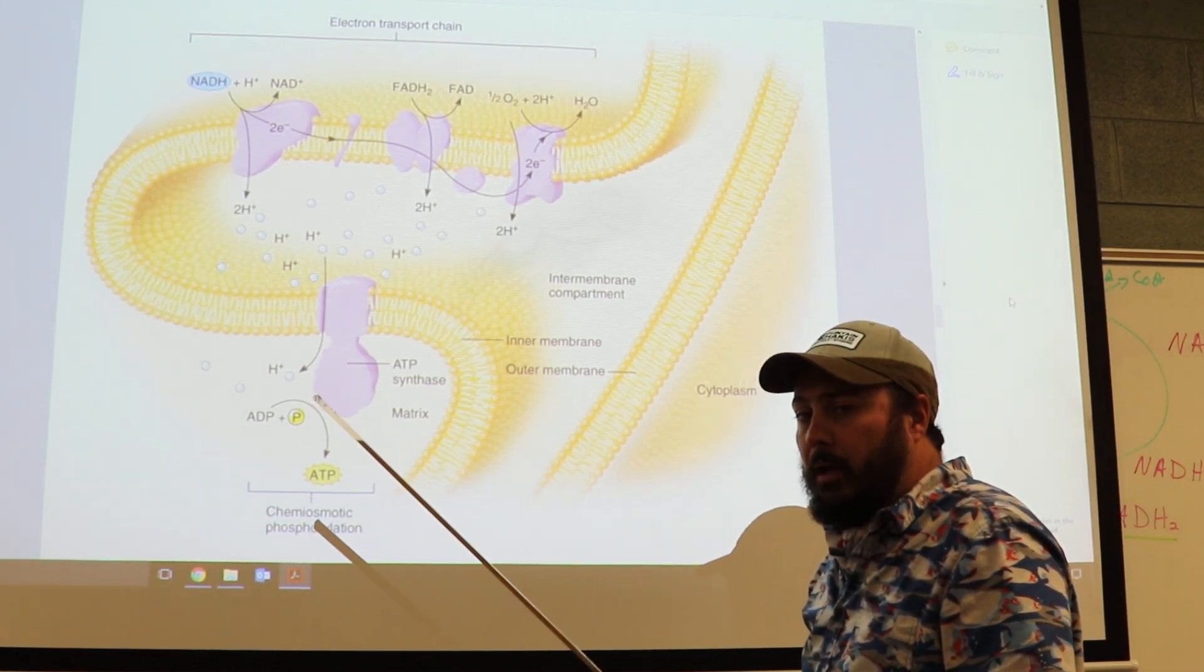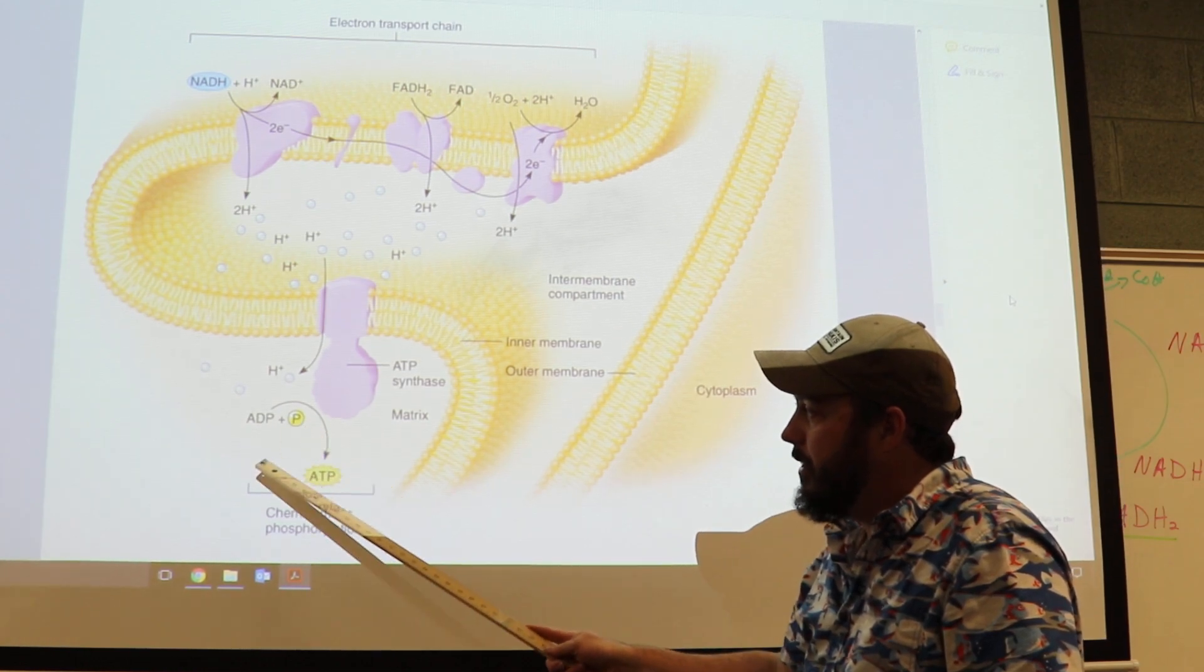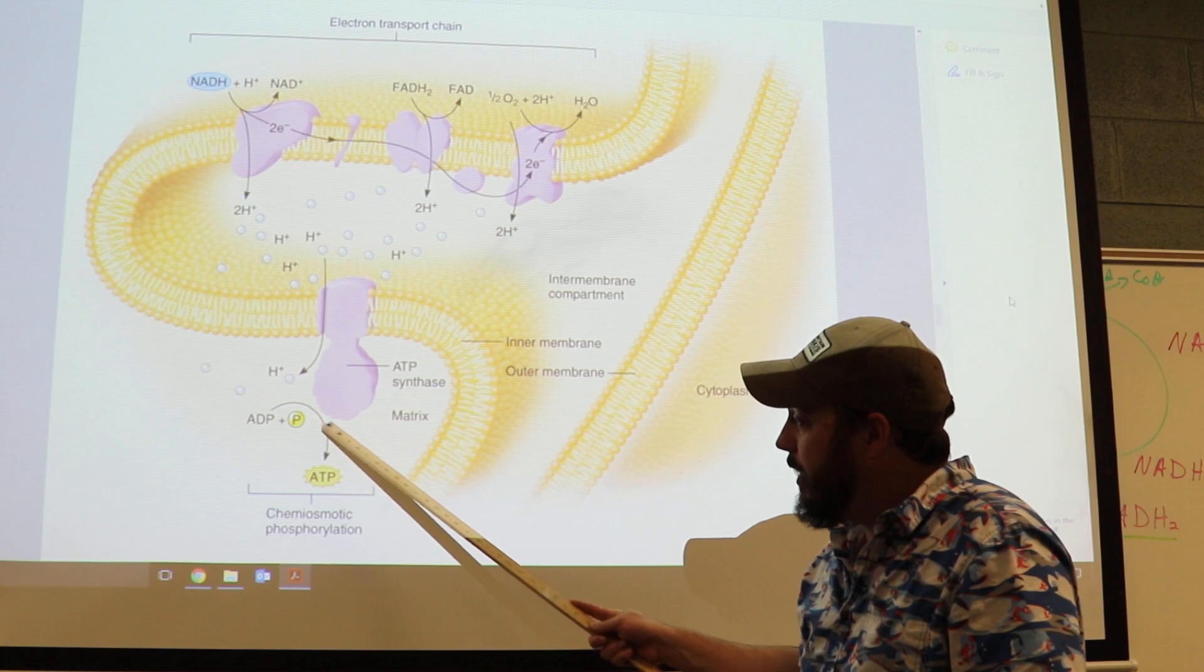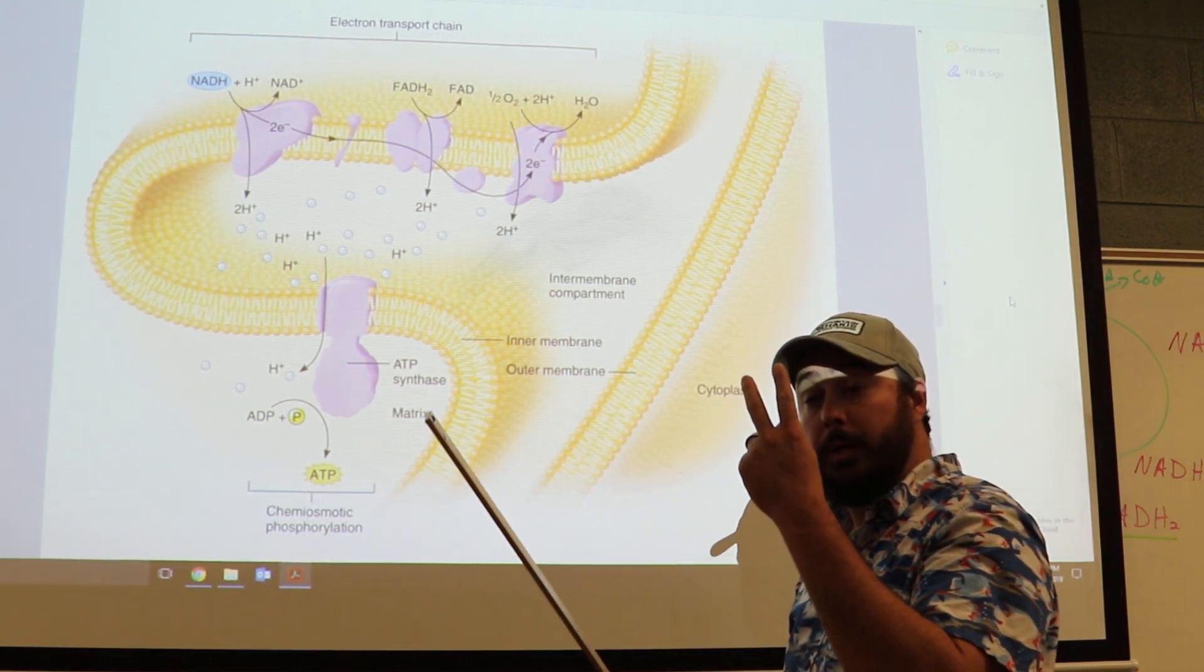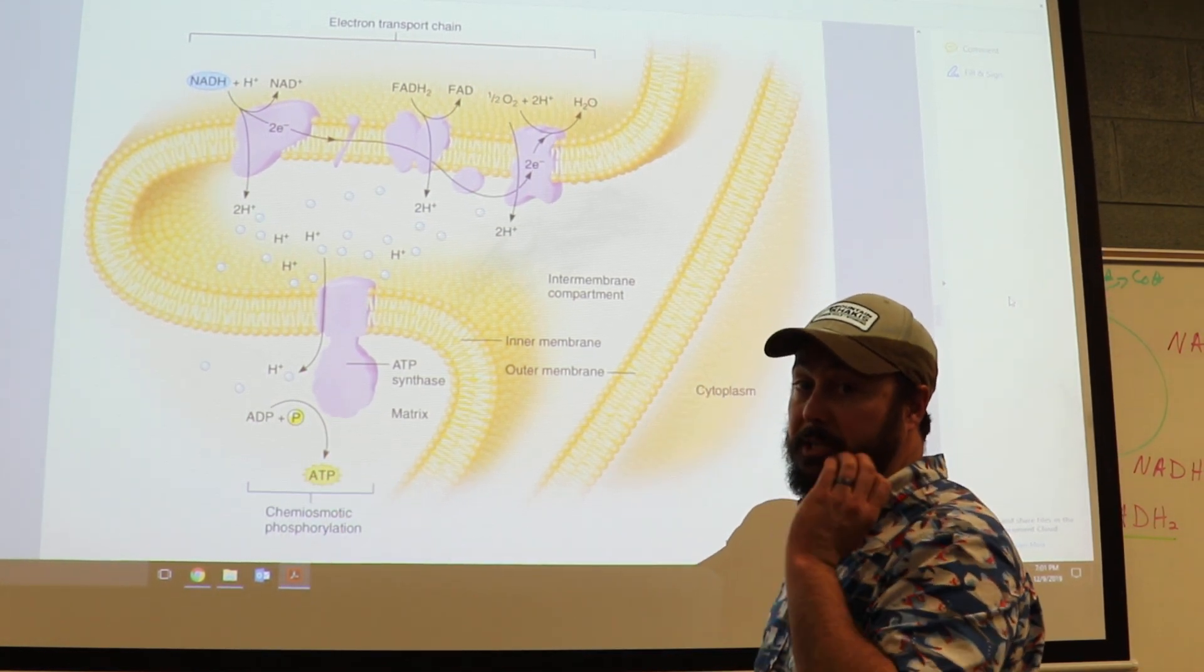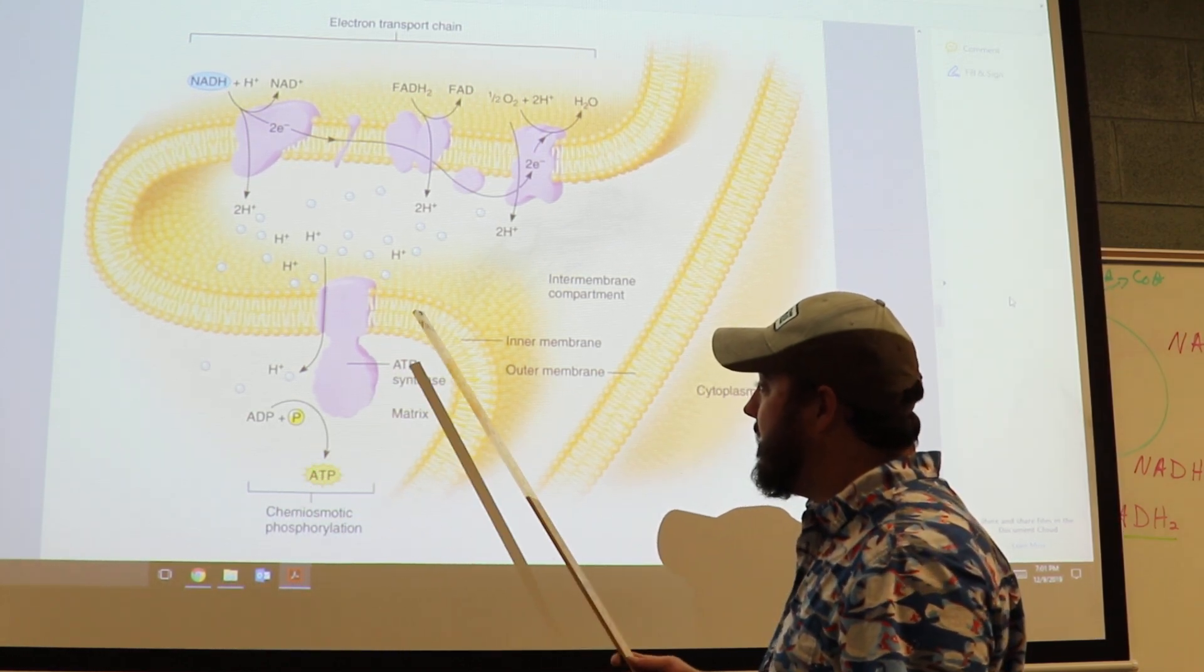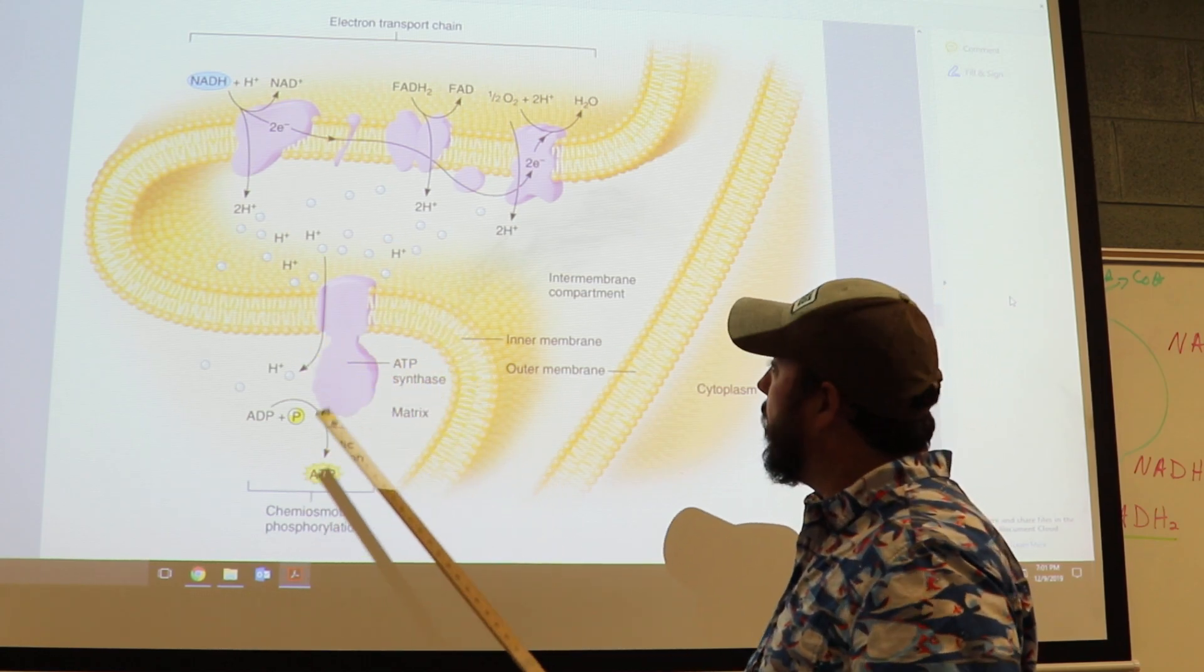It allows us to perform something called chemiosmotic phosphorylation. All that means is we're taking ADP plus a phosphorus, which is adenosine diphosphate, plus a phosphate, and we're turning it into ATP, which is triphosphate. So, we're going from two phosphates plus another one into one molecule with three phosphates. ATP, that is the cellular currency. So, that's the whole concept of the electron transport chain.